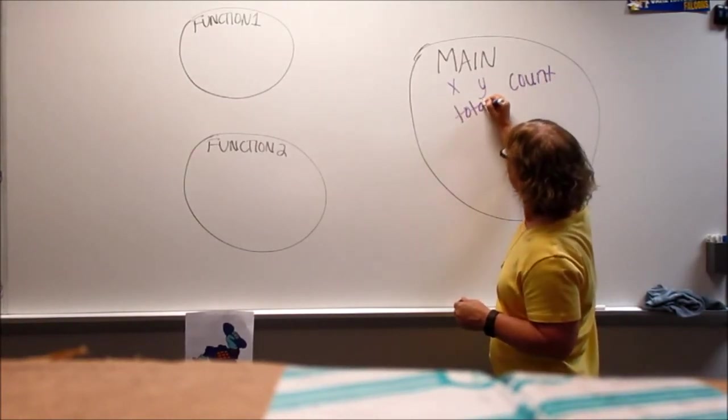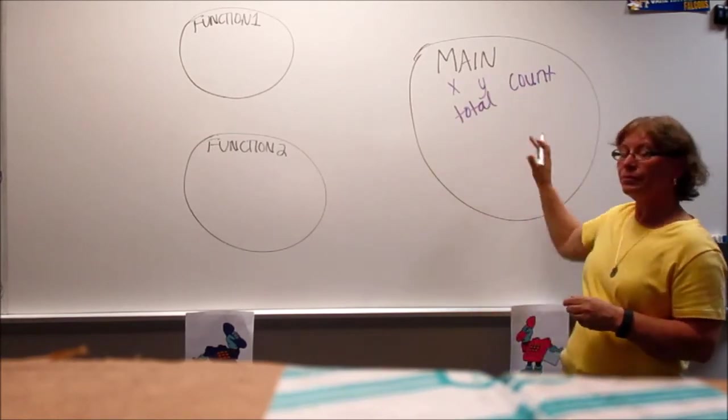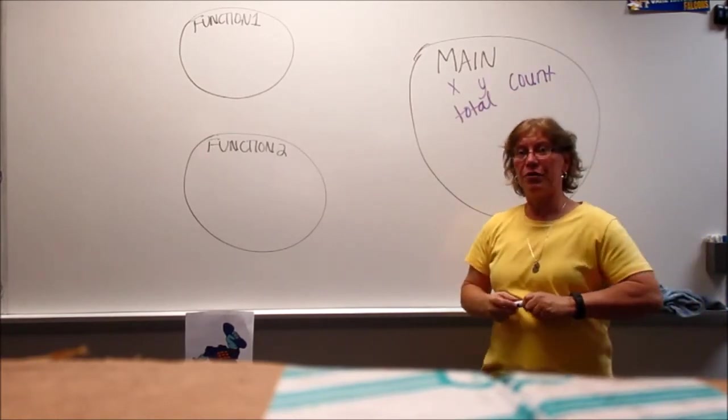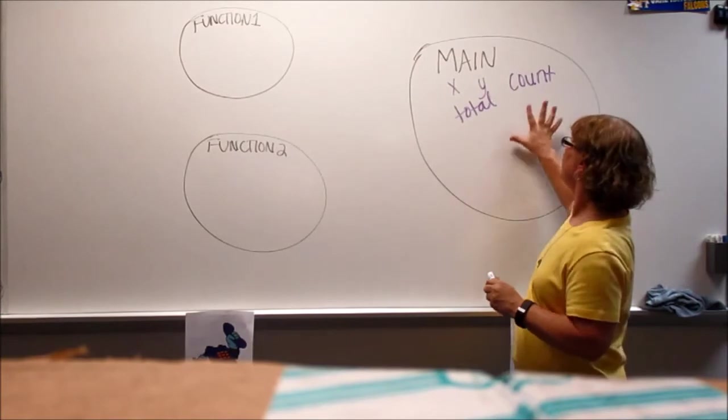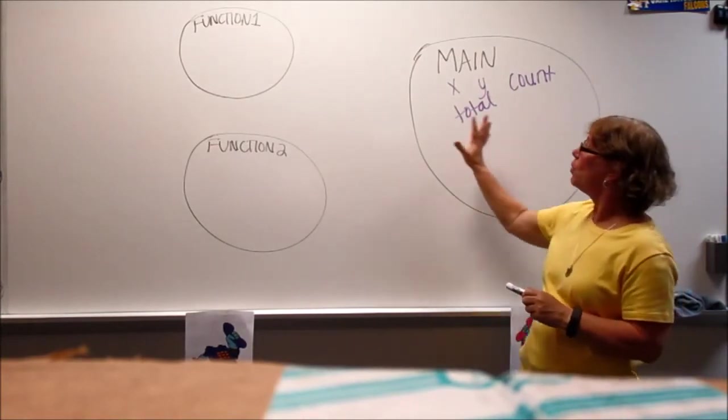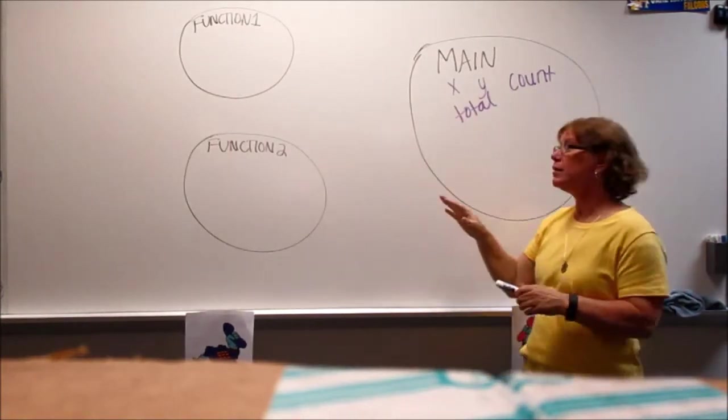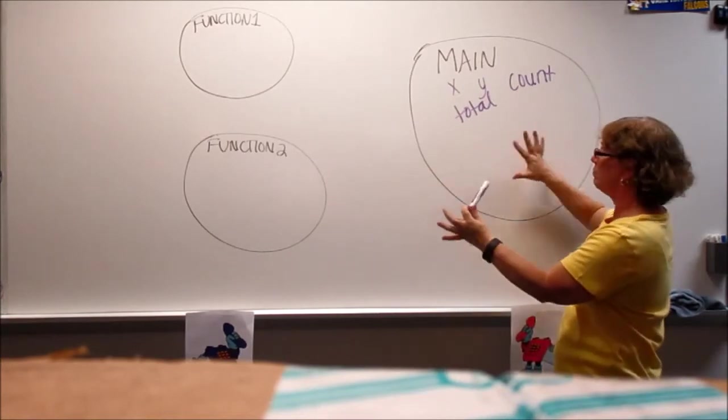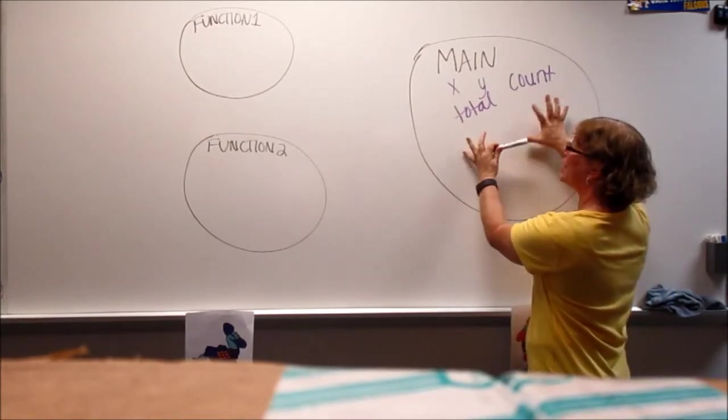We're going to declare all of our variables here in main and when we talk about the scope of a variable, these variables have to stay on the island. There's no boats, there's no airplanes, this is self-contained. So whatever is here has to stay here.